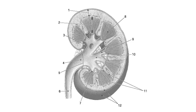For the kidney diagram, you should be able to name all features: (1) cortex, (2) renal medulla, (3) renal sinus, (4) renal pelvis, (5) hilus, (6) ureter, (7) papilla, (8) renal pyramid, (9) minor calyx, (10) major calyx, (11) renal columns, and (12) renal capsule.